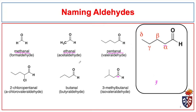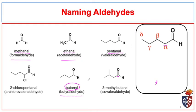The common names: we will find a lot of aldehydes talked about with their common names. For instance, formaldehyde and acetaldehyde are two compounds which we rarely call anything but formaldehyde or acetaldehyde. Butanal's common name is butyraldehyde, although it is becoming more common for people to call it by its IUPAC name.